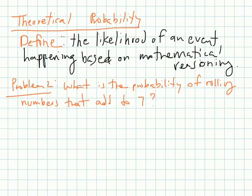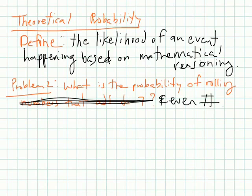So problem two, let's look at that, says what's the probability of rolling numbers that add to seven? Let's actually just make this simpler. Let's say that we're talking about one dice, and we say what is the probability of rolling an even number. So this isn't based off experiments. This just means if you roll the die, what's the probability of it being an even number? Well, let's look at how many sides we have on a die and what their numbers are. So we have six.